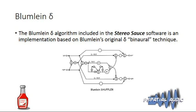In Stereo Source we implement a version of Blumlein's binaural technique in a modern digital implementation. The advantage is that you can use two near-spaced omni microphones to generate completely mono-compatible stereo recordings — interesting because many people prefer omni microphones to cardioid or figure-of-eight for their generally more open sound.